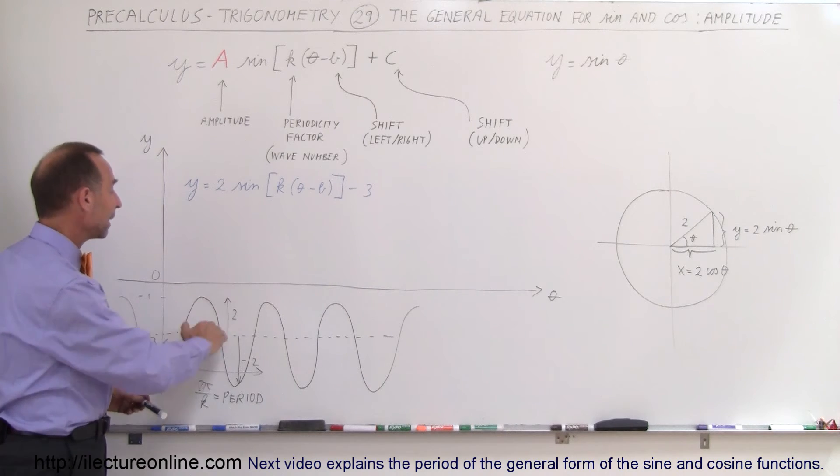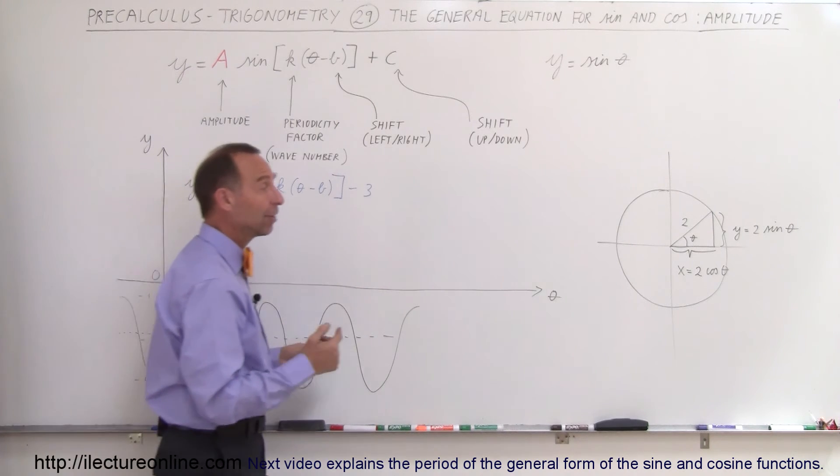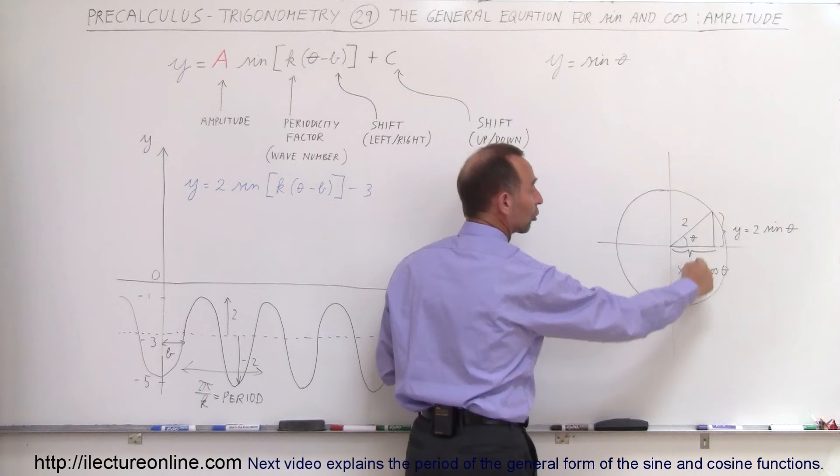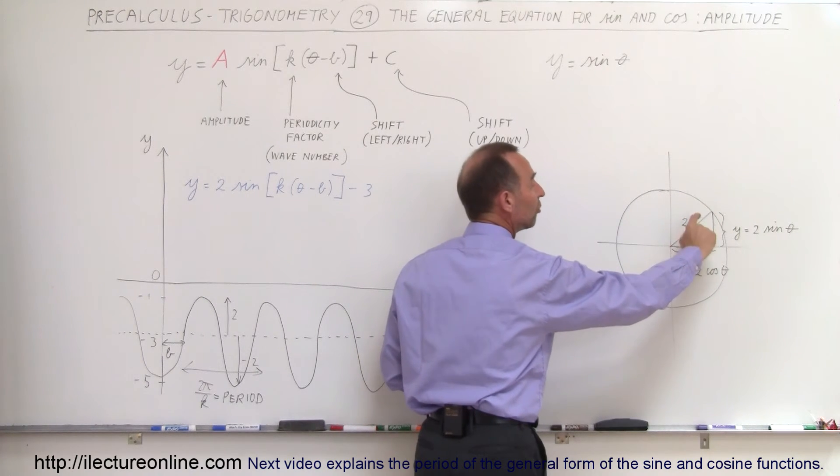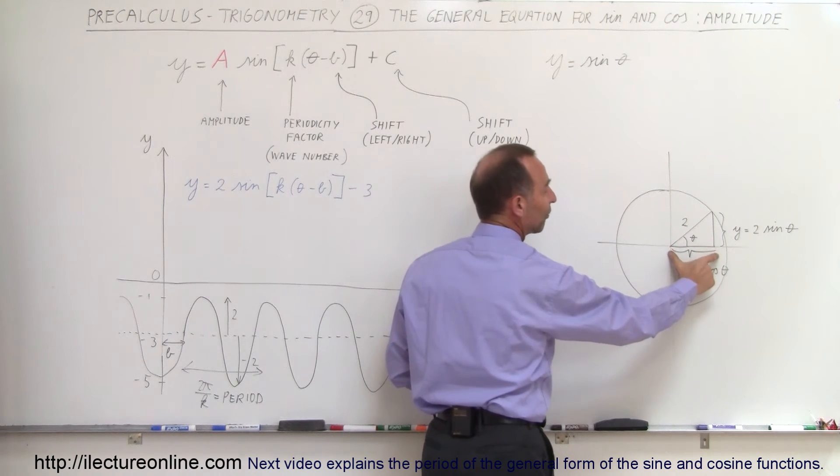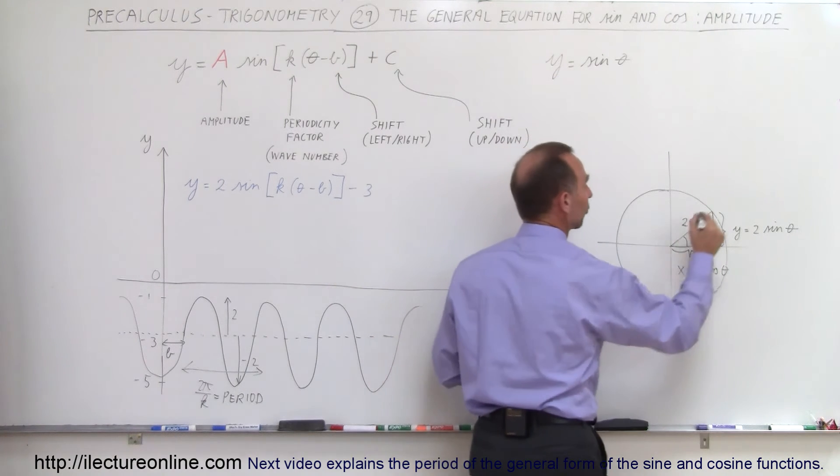So that's what we mean by the amplitude. And so you can think of it as going around not a unit circle but a circle with radius of 2 units.